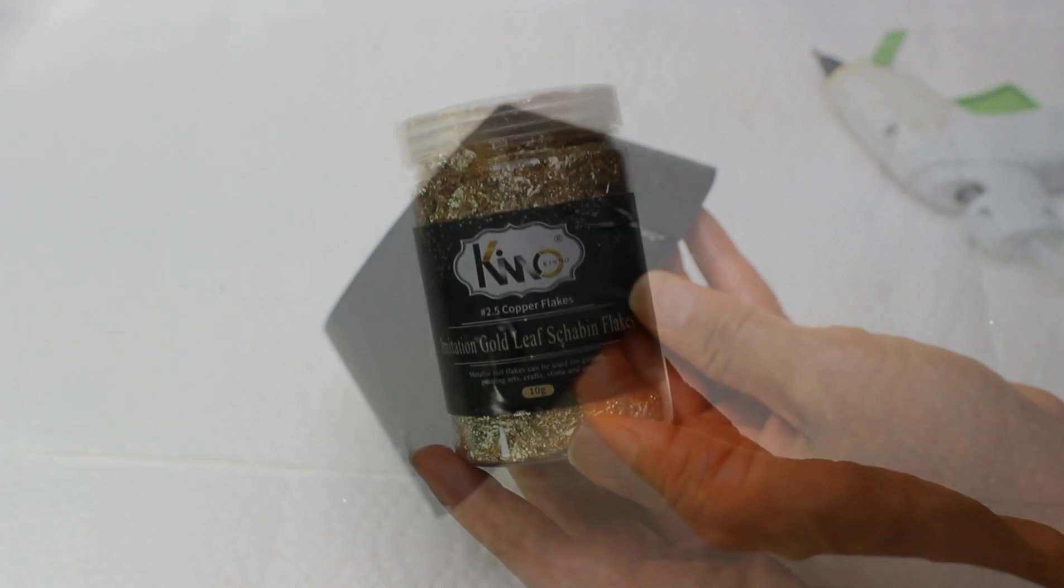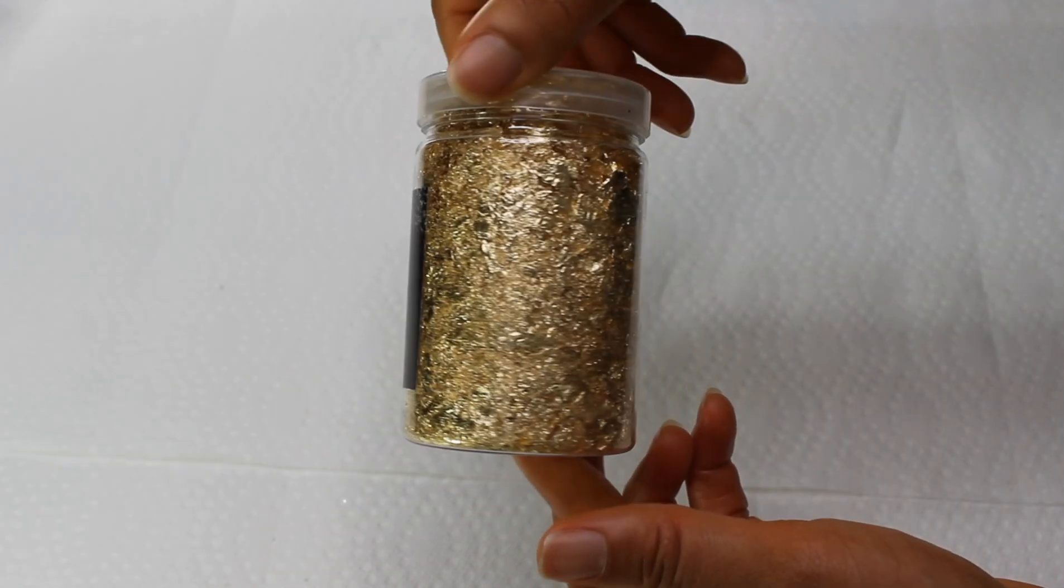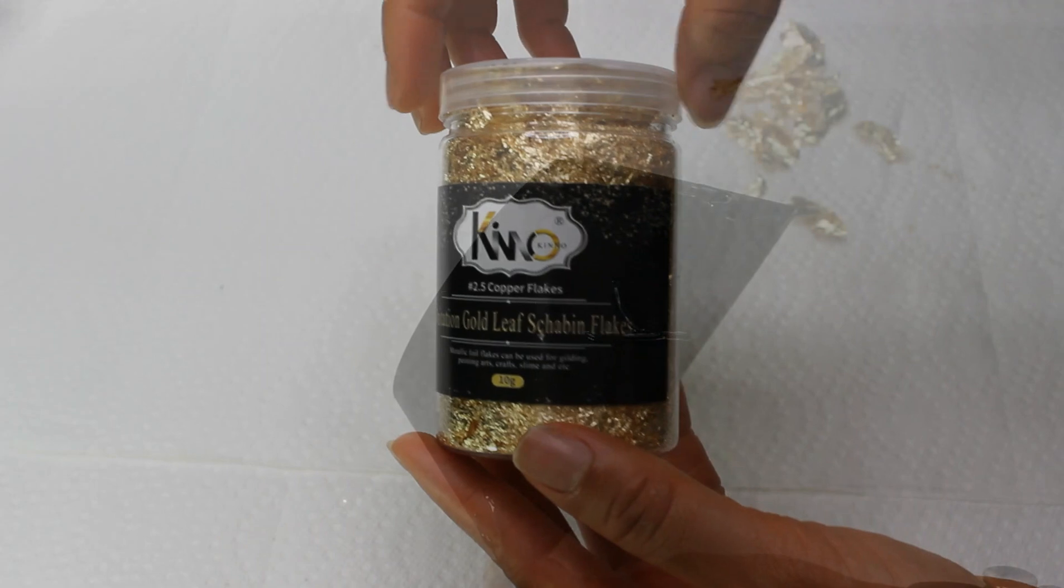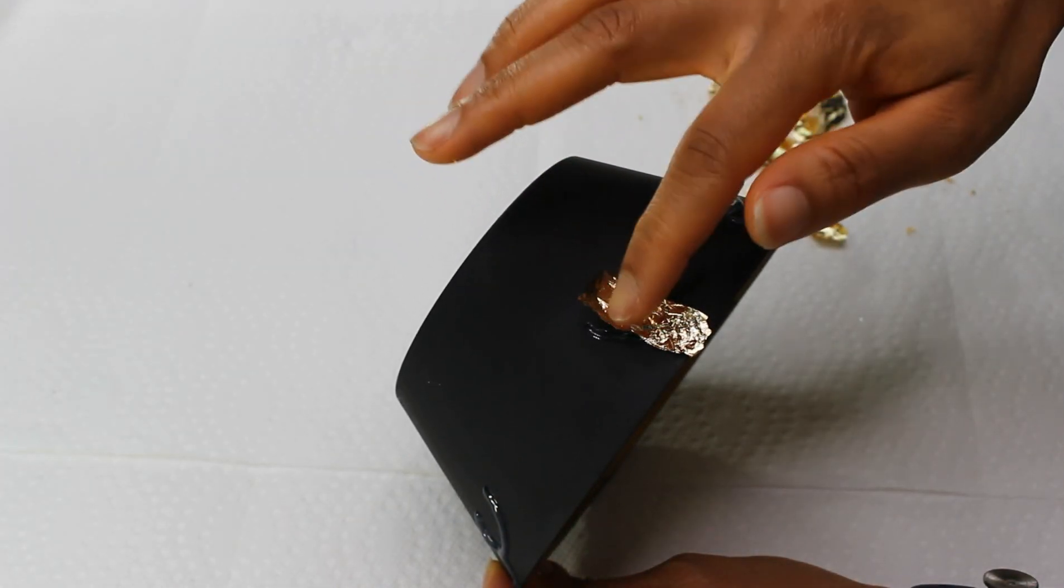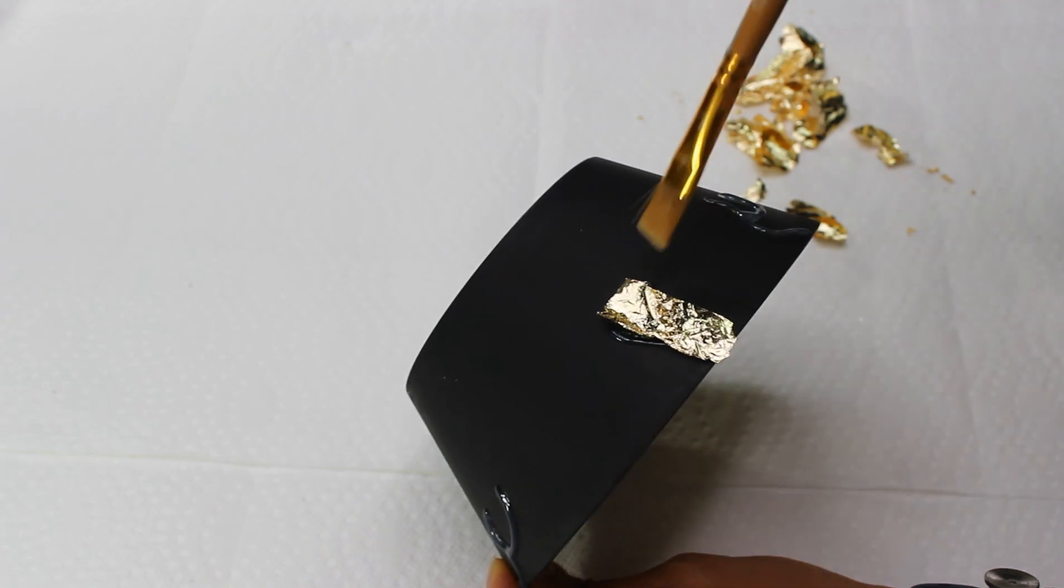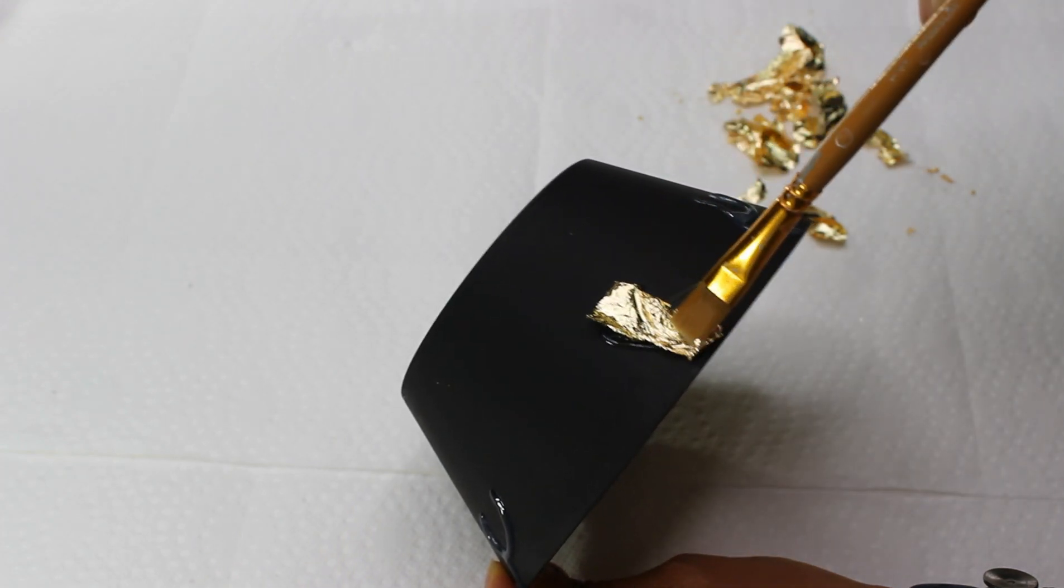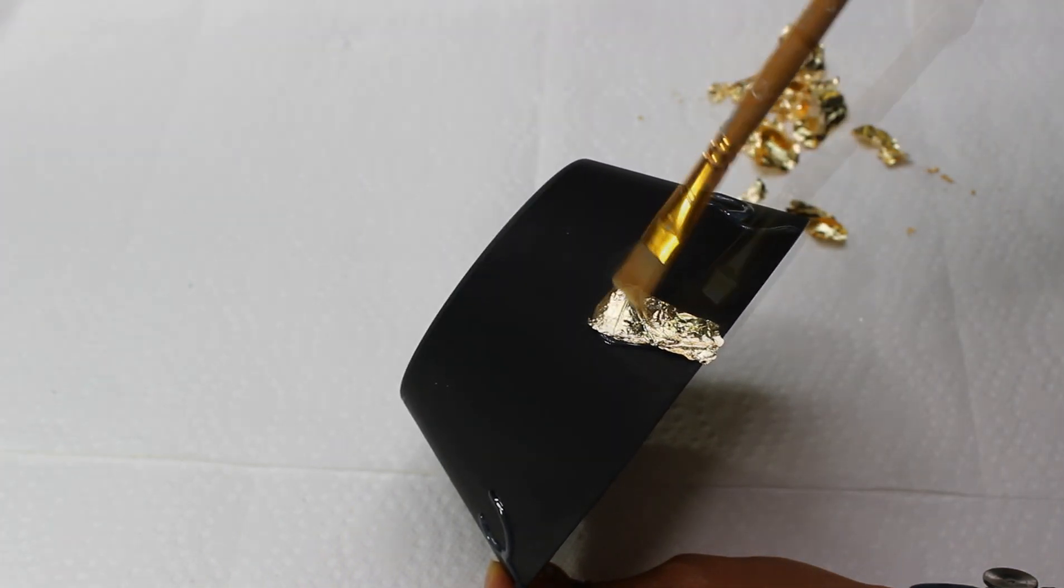Once the hot glue has had time to harden, I'm going to go in with this imitation gold leaf flake from Amazon. My method here is just to lay out the imitation gold leaf onto the patterns that I made with the hot glue and then just pat them down.